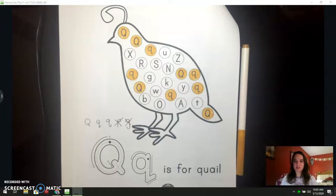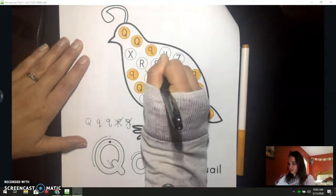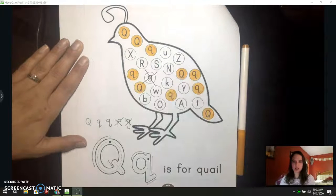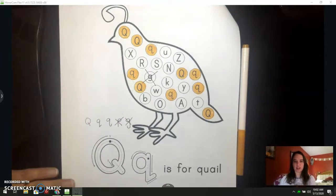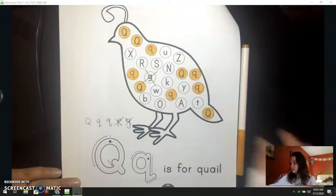There was one really tricky one. They tried to trick you with a G right here. If you accidentally colored it, just put an X through it like that. That's fine. Now, let's do our tracing.